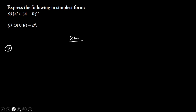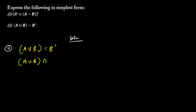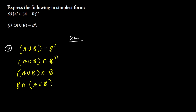From what we have been given we have open bracket A union B, close bracket, minus B complement. What we are going to do is say A union B, then that minus goes to intersection, and this B will be B complement complement. So B complement complement is simply B, giving us A union B intersection B.